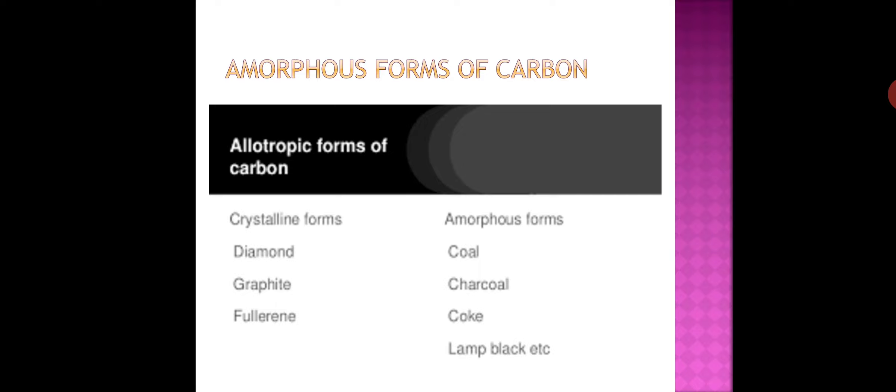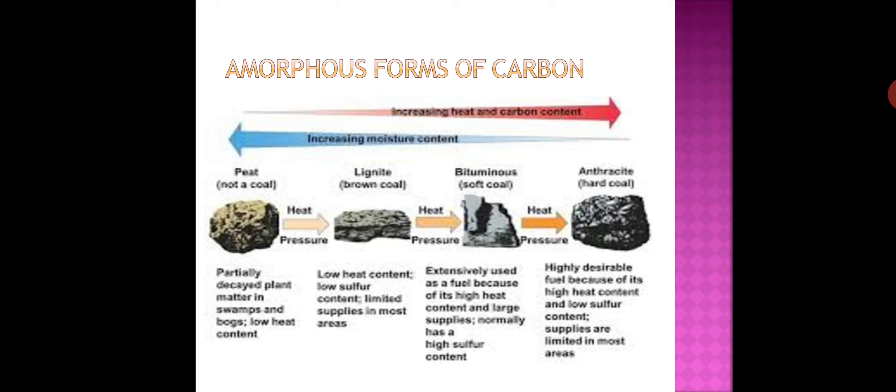The amorphous form of carbon has an irregular arrangement of carbon atoms. Coal and coke are the non-crystalline forms of carbon. Coal is a fossil fuel that contains carbon, hydrogen, oxygen, nitrogen, phosphorus, and sulfur. It occurs in solid state and is of four types: peat, lignite, bituminous coal, and anthracite.